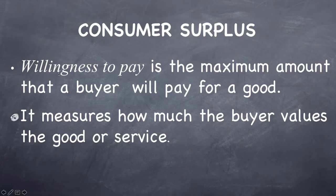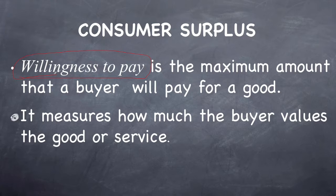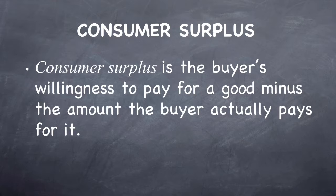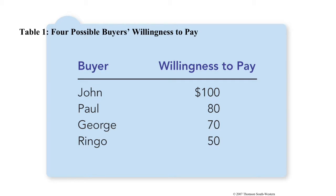When it comes to consumer surplus, demand is essentially willingness to pay — the maximum amount a buyer will pay for a good, measuring how much the buyer values it. Consumer surplus is a buyer's willingness to pay minus the price they actually pay. For example, if you're willing to pay $50 for shoes but they're on sale for $20, your consumer surplus is $30.